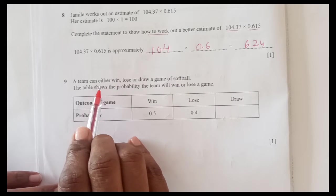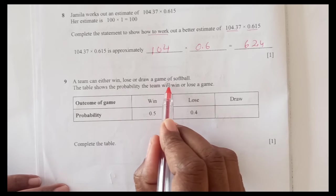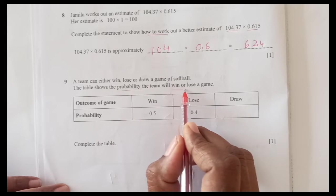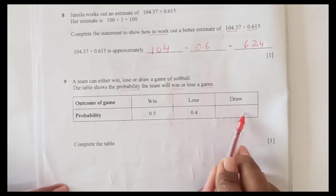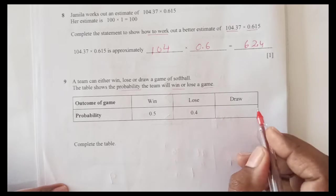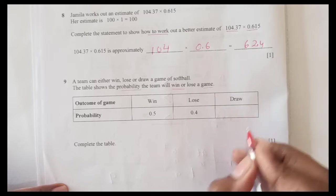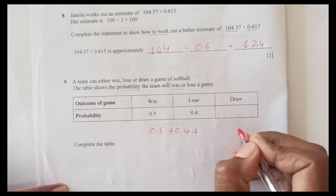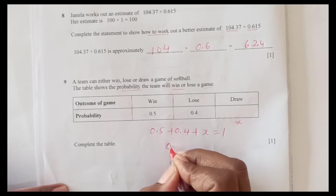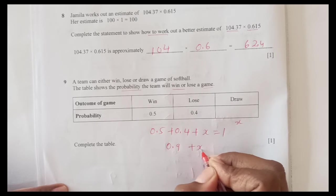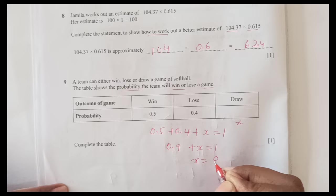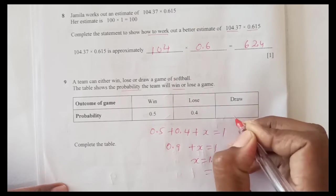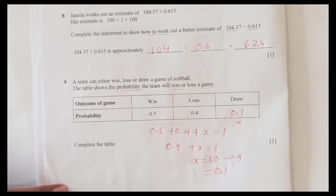A team can either win, lose or draw a game of softball. The table shows the probability that the team will win or lose the game, this one is empty, complete the table. Now we know that the sum of the probability is always 1. So 0.5 plus 0.4 plus let's say this is x equals 1. This is 0.9 plus x is 1, so x is 0.1, this 1 minus 0.9 that is 0.1. So this will be 0.1.